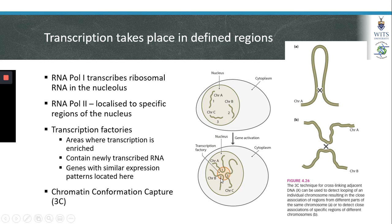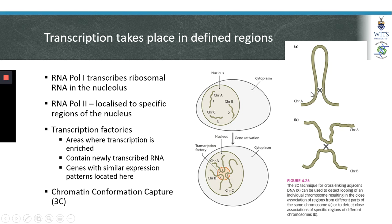These transcription factories have been shown to contain RNA polymerase 2 as well as newly transcribed RNAs. In addition, genes with similar expression patterns have been shown to be located within these transcription factories. A group of techniques collectively referred to as chromatin conformation capture involve the use of DNA cross-linking agents to investigate DNA-DNA interactions. These studies have shown that looping of DNA can result in increased transcription, and that certain regions of DNA from two different chromosomes can also associate with each other and regulate gene expression.